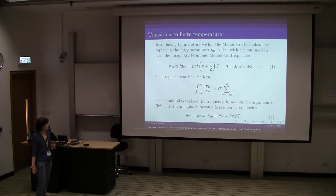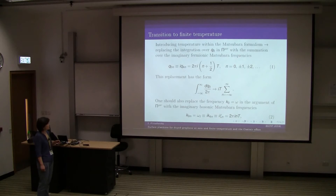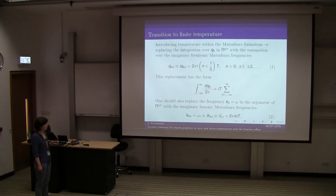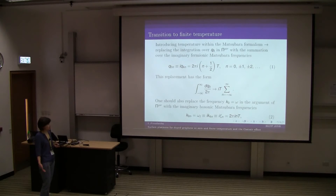Another generalization is to consider finite temperature. To this end, we introduce temperature in our quantum field theory using standard Matsubara formulas — we just replace integrations by summations over Matsubara frequencies. Making this substitution in all the formulas, we get the definition of the polarization tensor at finite temperature.